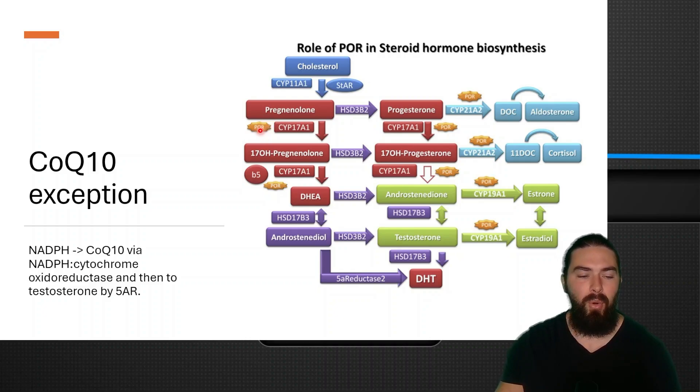And you can see that POR, which is basically the user's coenzyme Q10, is a cofactor for most steroidogenic enzymes, which converts pregnenolone to 17-hydroxypregnenolone, converts into DHEA, converts progesterone into 17-hydroxyprogesterone, converts into androstenedione, seems to be involved in a conversion to cortisol, progesterone to aldosterone, androstenedione into estrone.